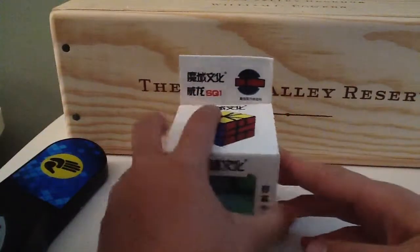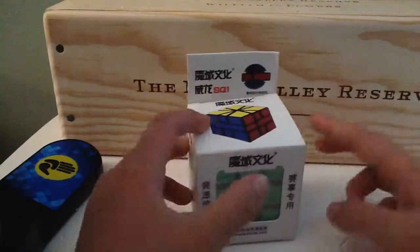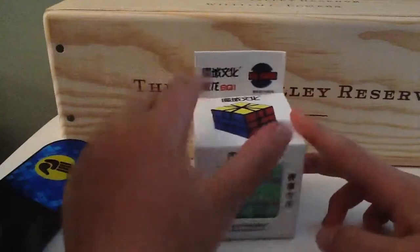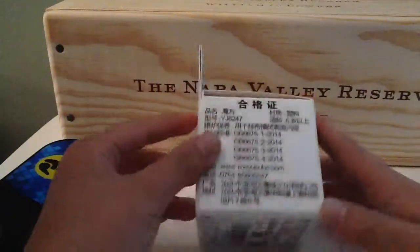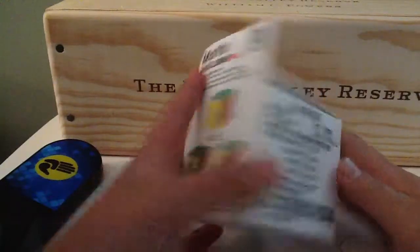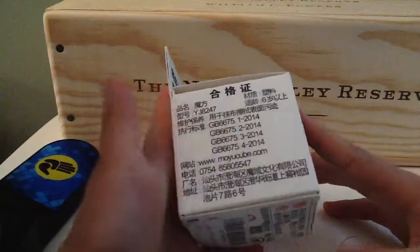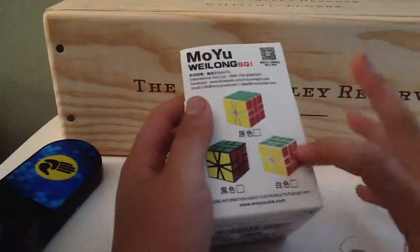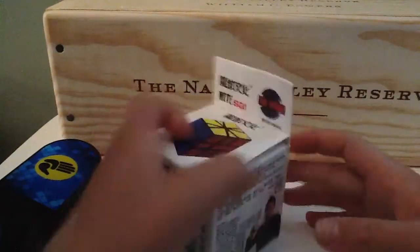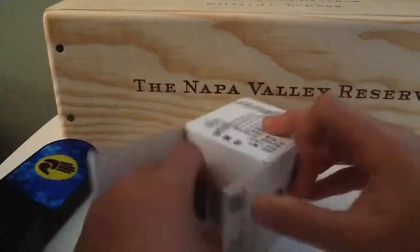You can see right through it from the front, and I guess this is Moyu Weilong in Chinese or whatever that is. And then it shows like other square ones. Okay, I think that's enough. We should open this up.